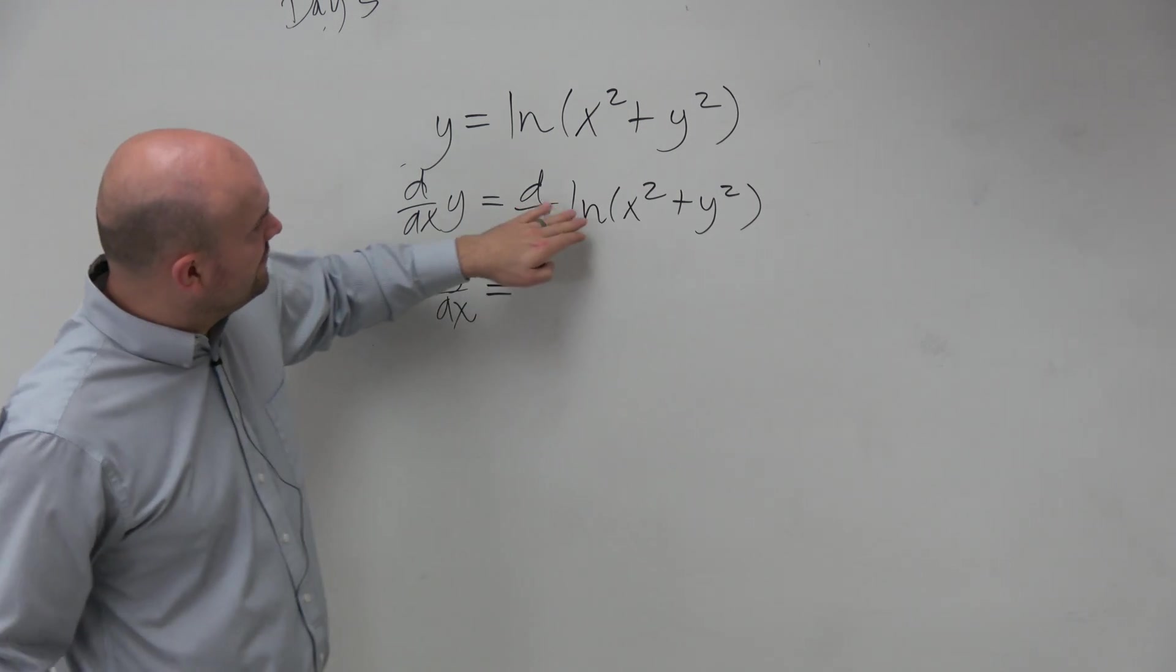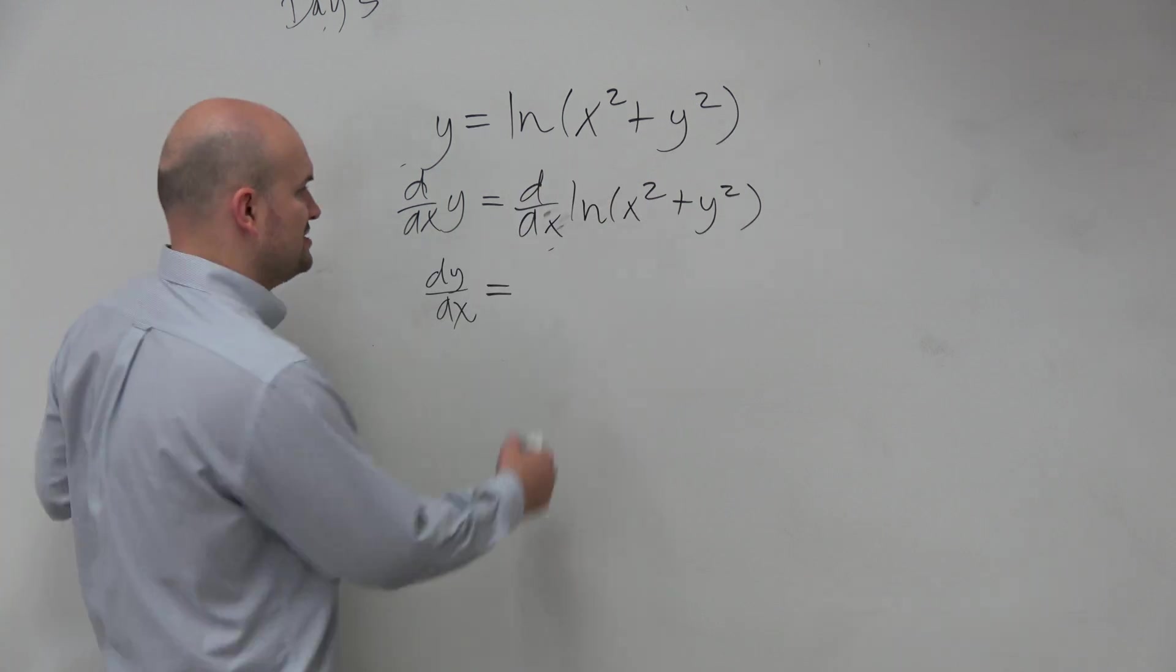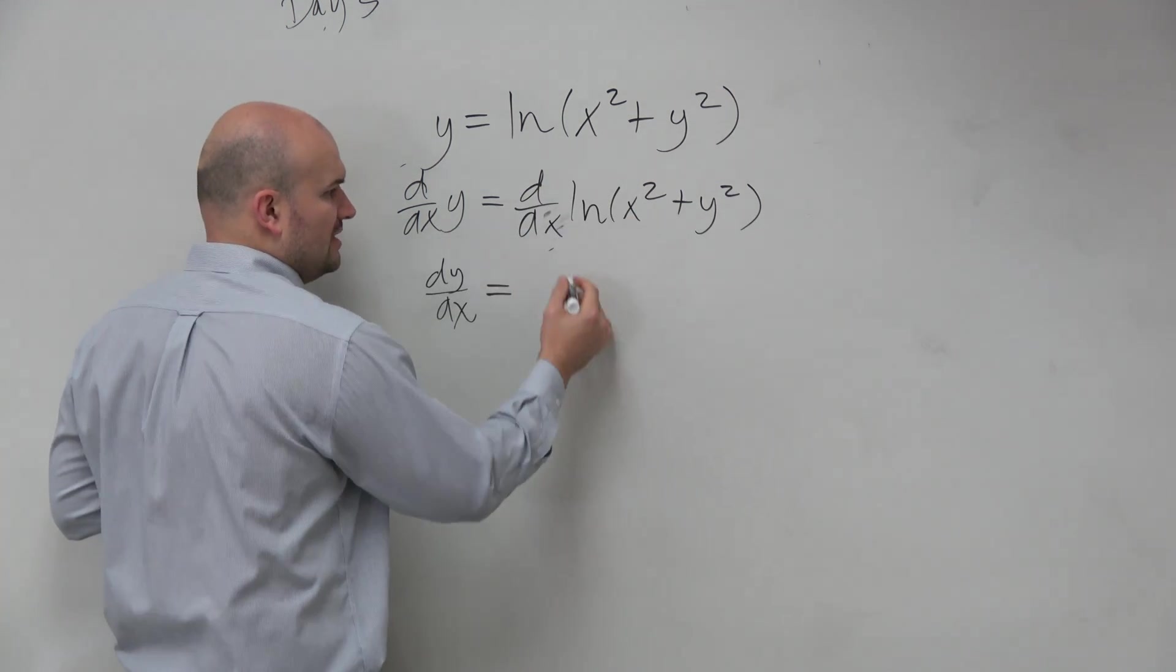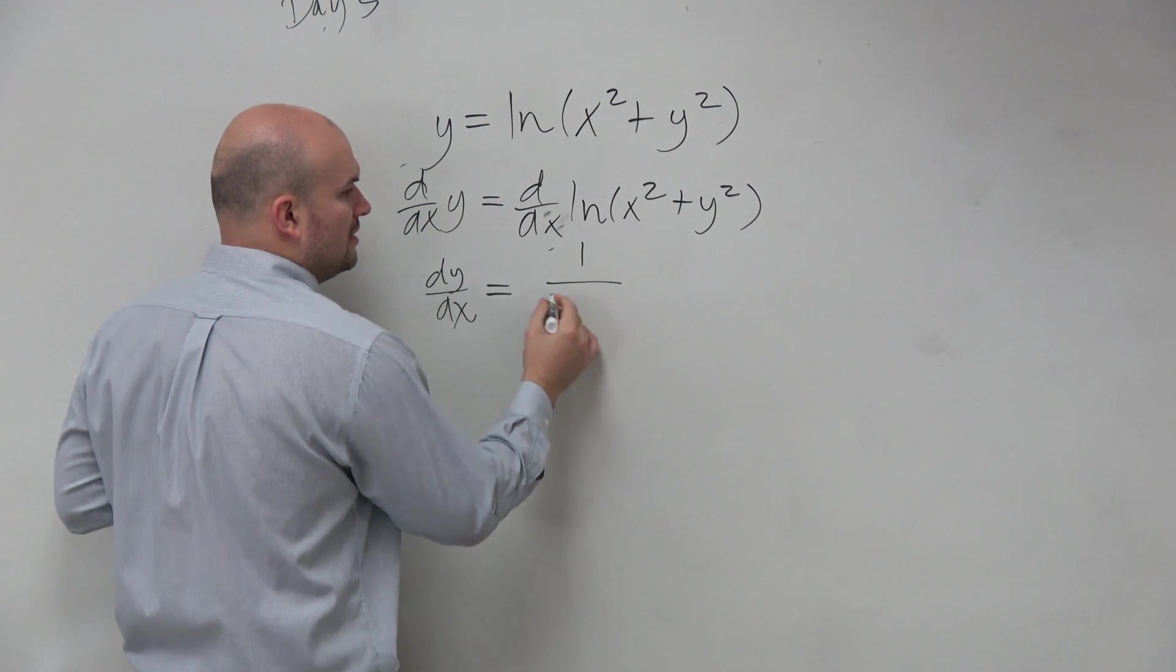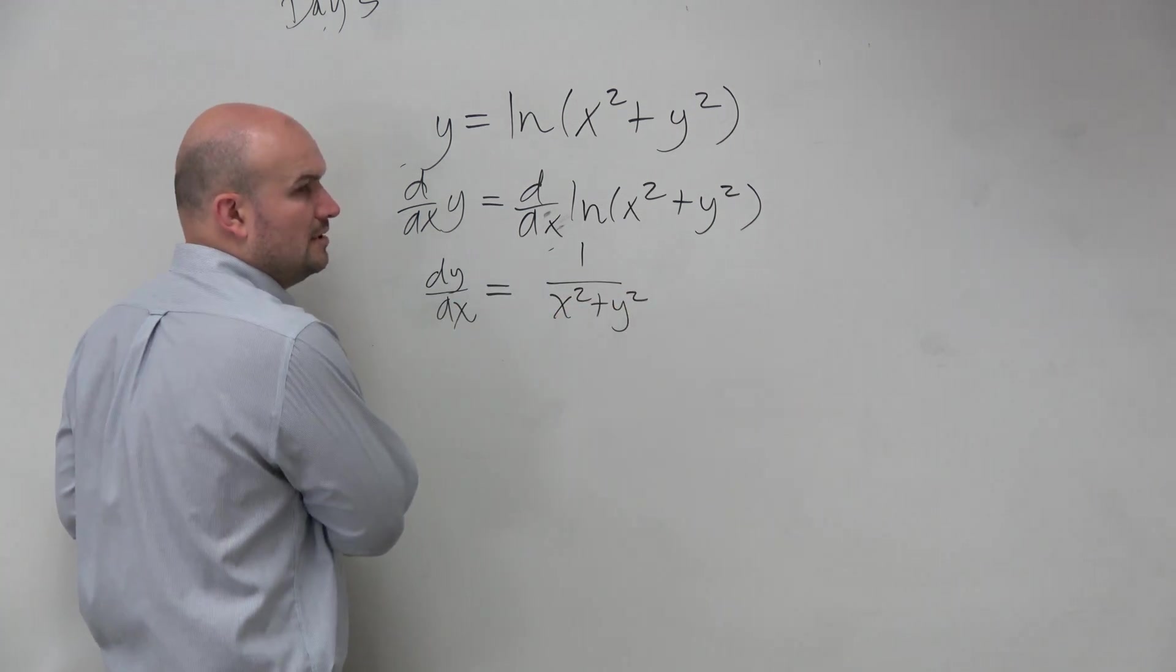The derivative of ln of x squared plus y squared. So again, remember, it's going to be 1 over x squared plus y squared, right?